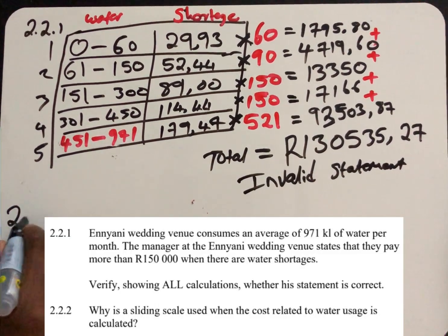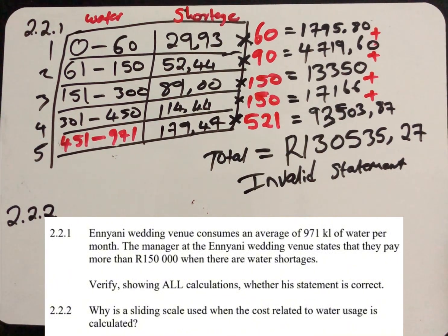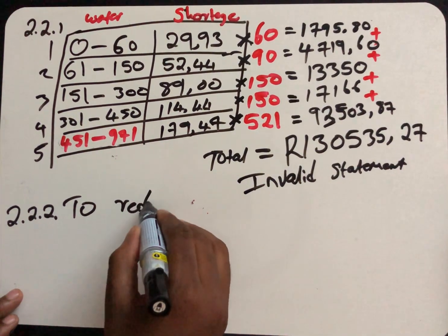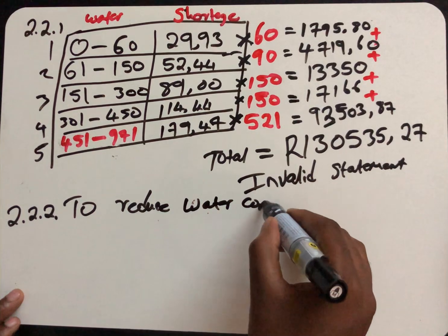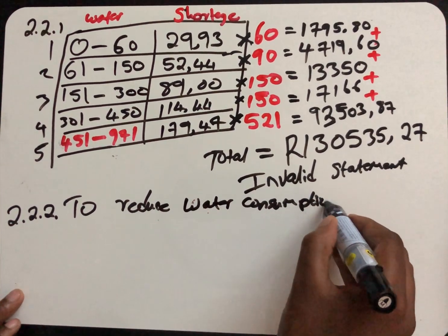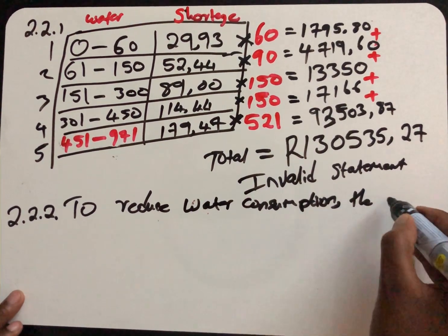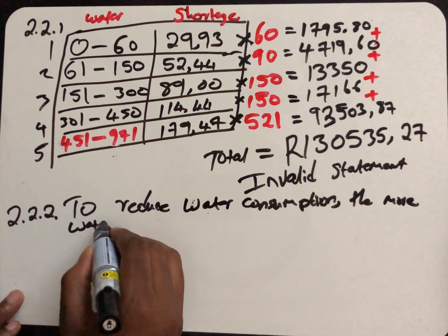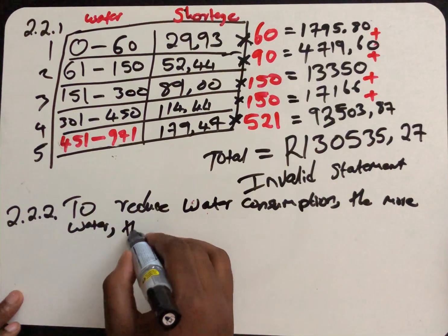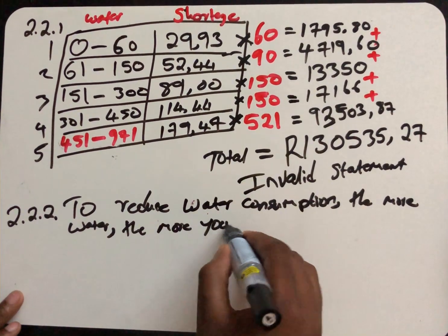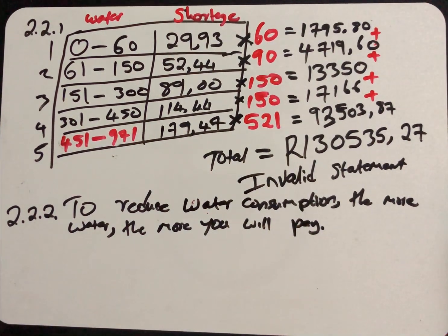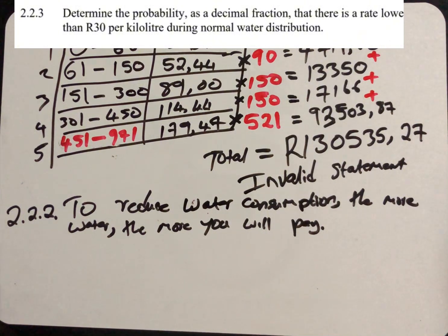We move to the next question. 2.2.2 says: Why is a sliding scale used when the cost related to water usage is calculated? The reason for this sliding scale is to reduce the water consumption. Because the more water you use, the more you will pay. That's the answer. So, if you use more water, you're going to pay more amount. Use less water, you're also going to pay less.